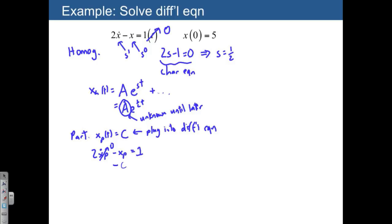So we end up with negative c is equal to 1, which then means that c is equal to negative 1. So now we have our homogeneous and particular solutions. We add these together to form the general solution, which is going to be these two parts together.